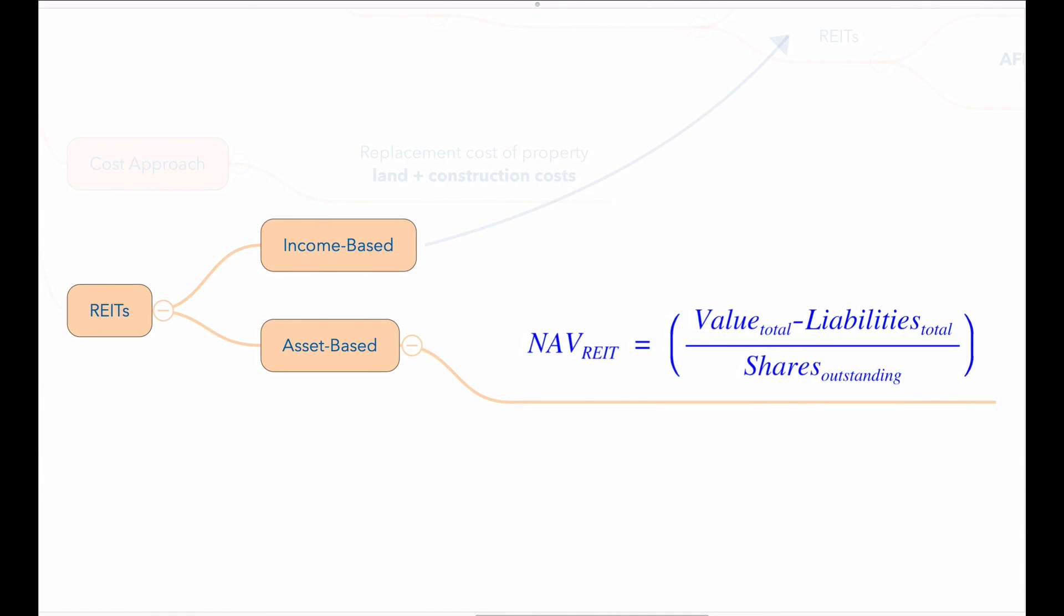A final valuation approach specific to REITs is the asset-based approach to calculate a REIT's net asset value or NAV. Generally, a REIT's NAV is calculated as the estimated market value of a REIT's total assets minus the value of its total liabilities. REIT shares frequently trade at prices that differ from its NAV per share. Note that both premiums and discounts to the NAV are observed in the market.